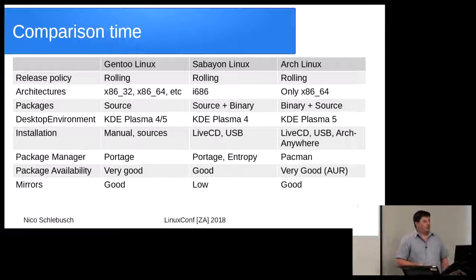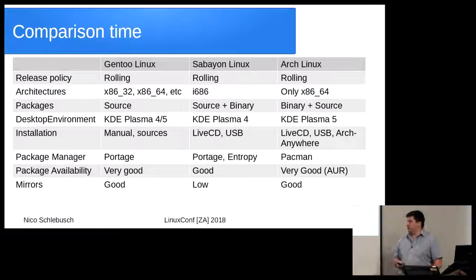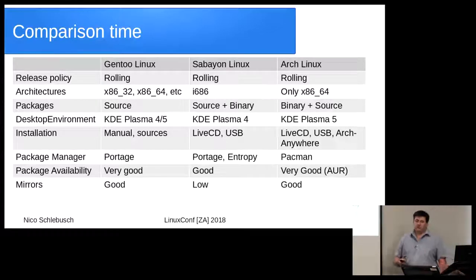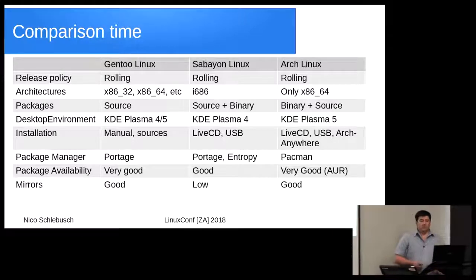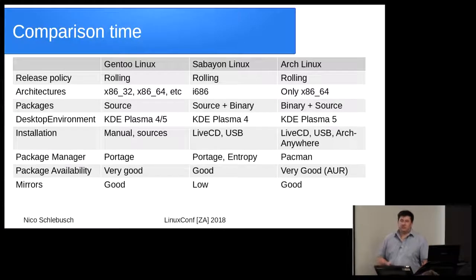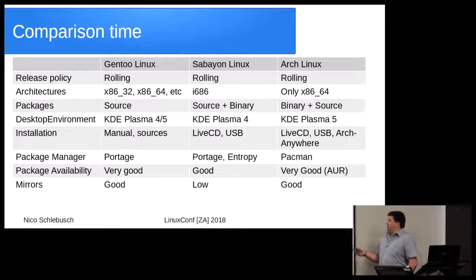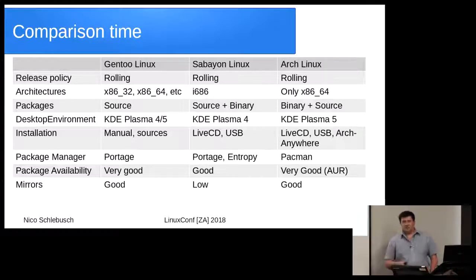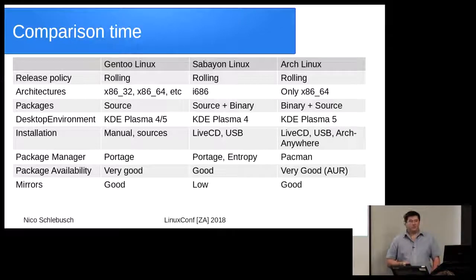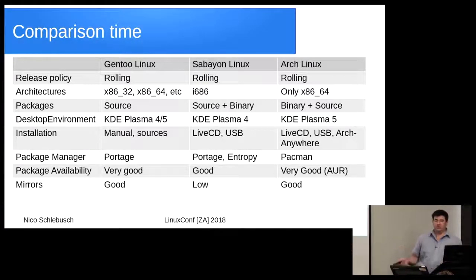In terms of packages available: Gentoo is actually quite good with the amount of software available. I've rarely had to look in a very weird place to find what I need. Sabayon has a little less available because they do binaries and only so many people compile packages. Arch Linux actually probably has the second biggest software repository — the Arch User Repository — with about 47,000 packages. I have yet to look for something that's not there or not in the base system.